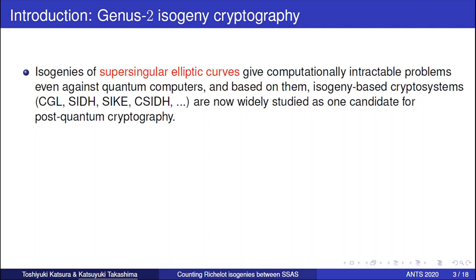Isogenies between super-singular elliptic curves give computationally intractable problems even against quantum computers. And based on such intractability, isogeny-based crypto like CGL hash, SIDH, CSIDH, and CSIKE key exchange are now widely studied as one candidate for post-quantum cryptography.